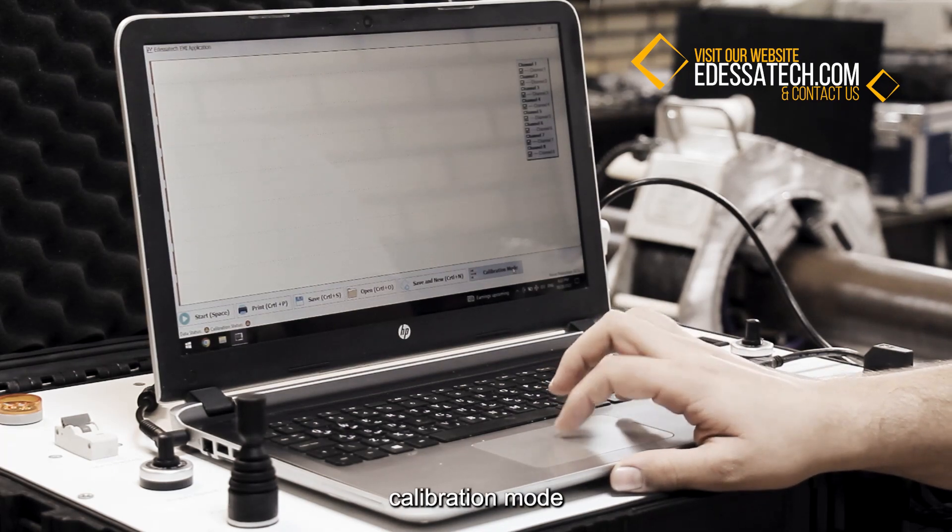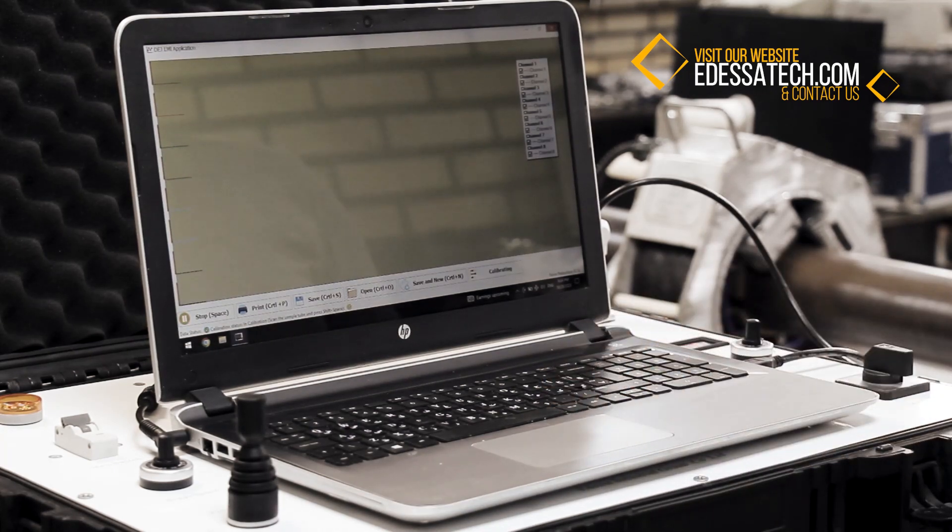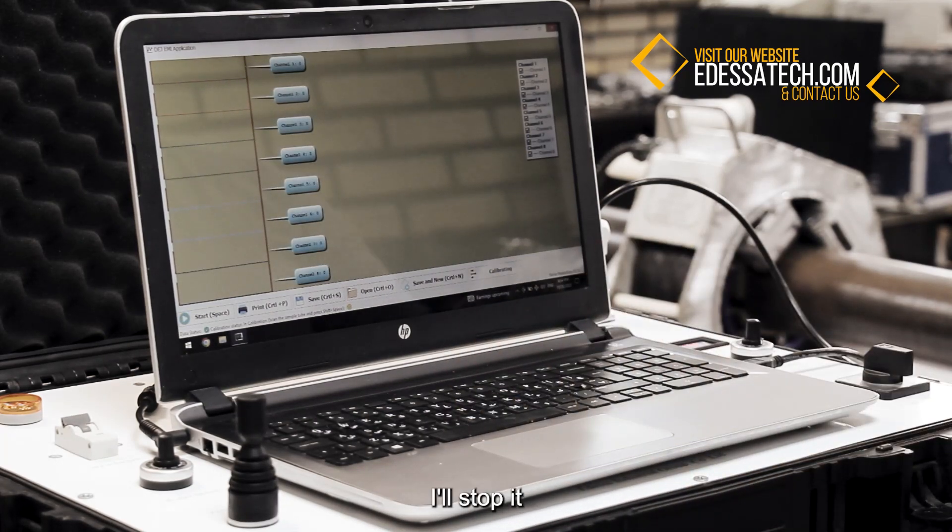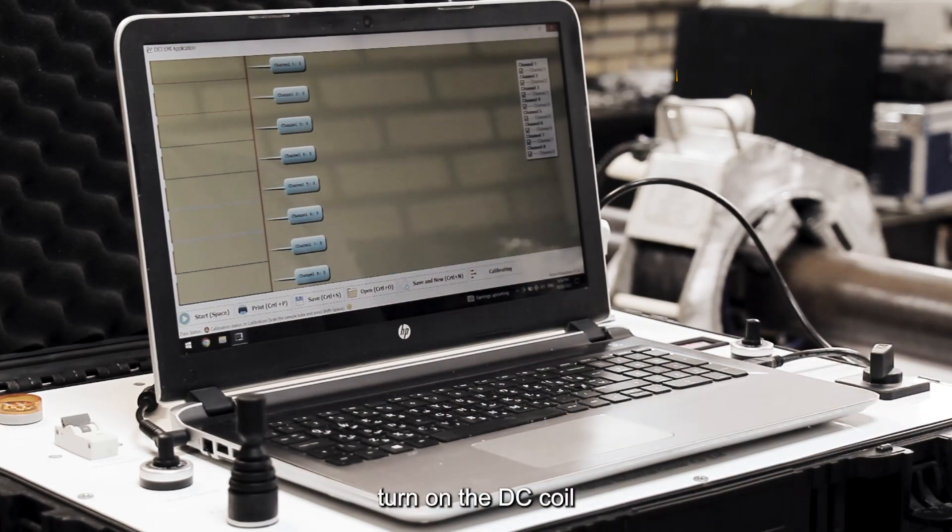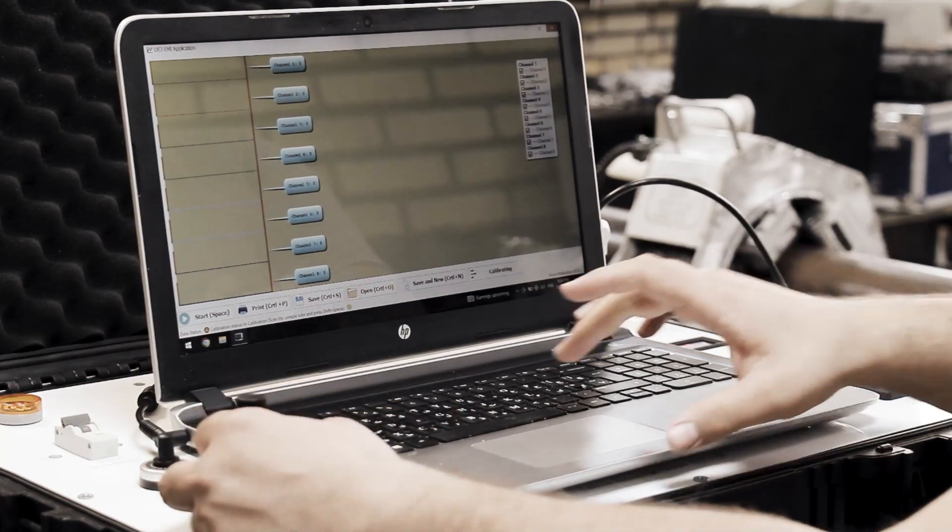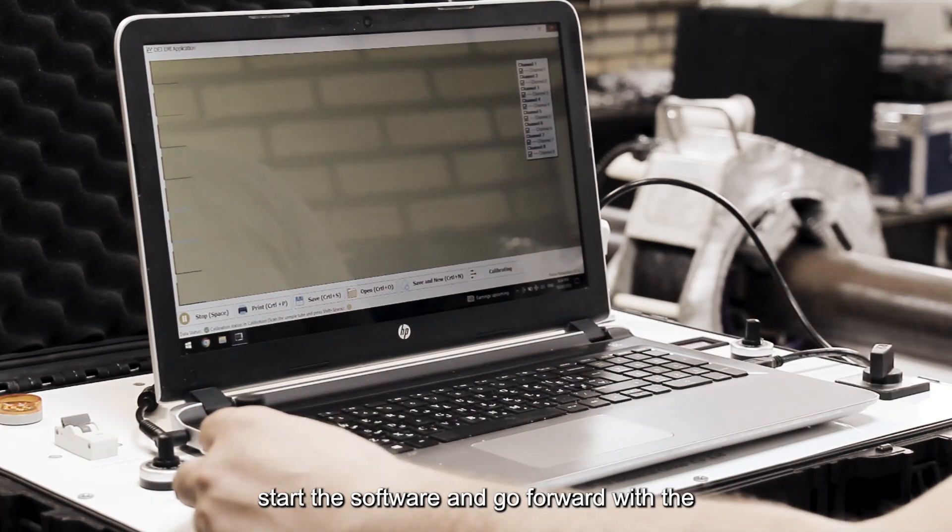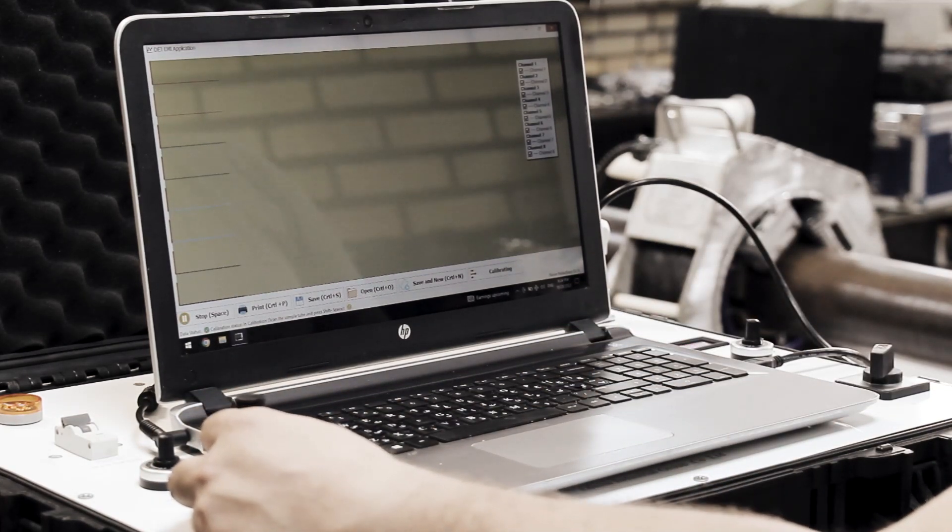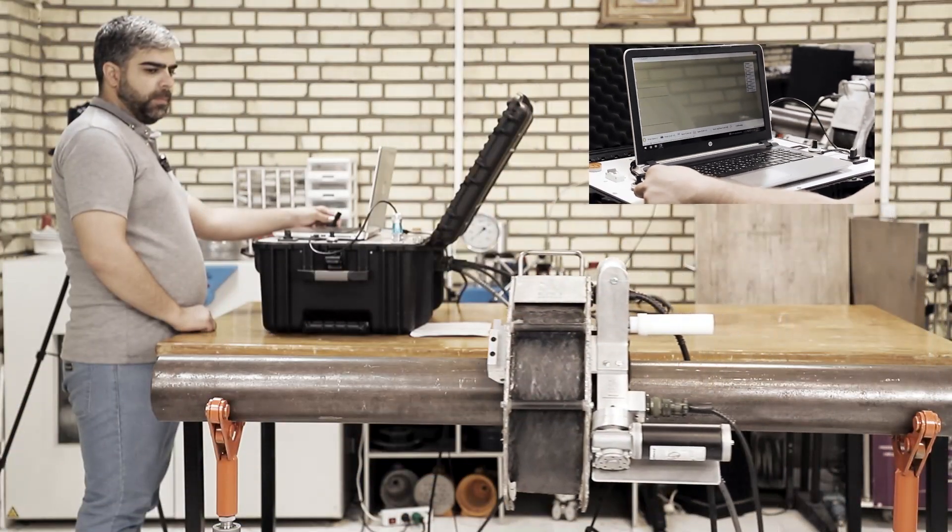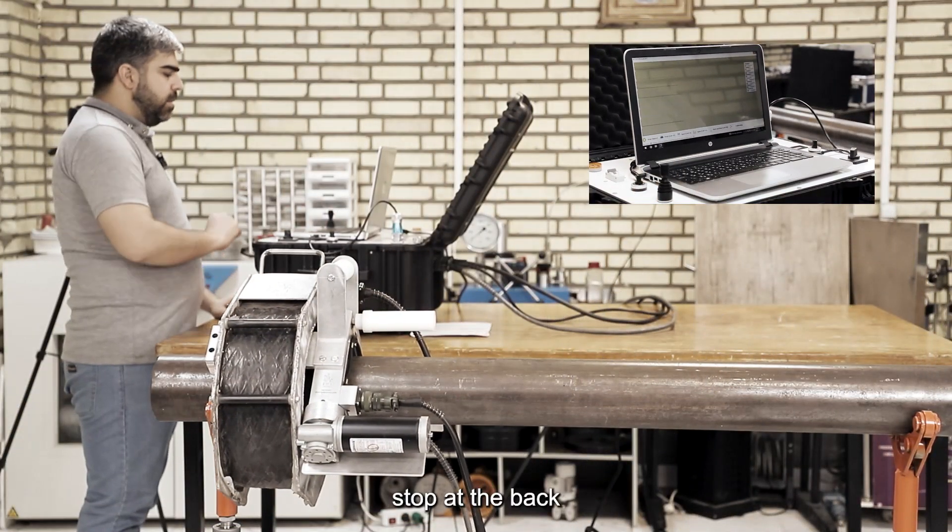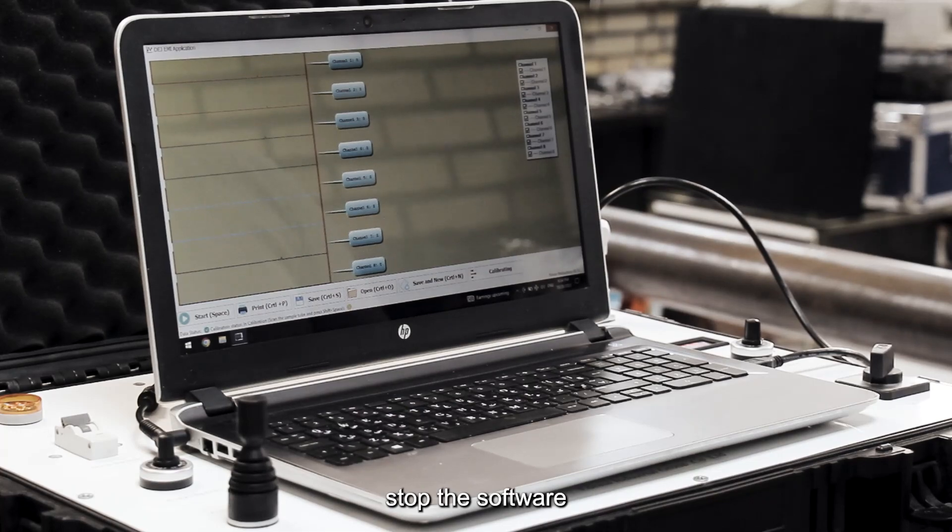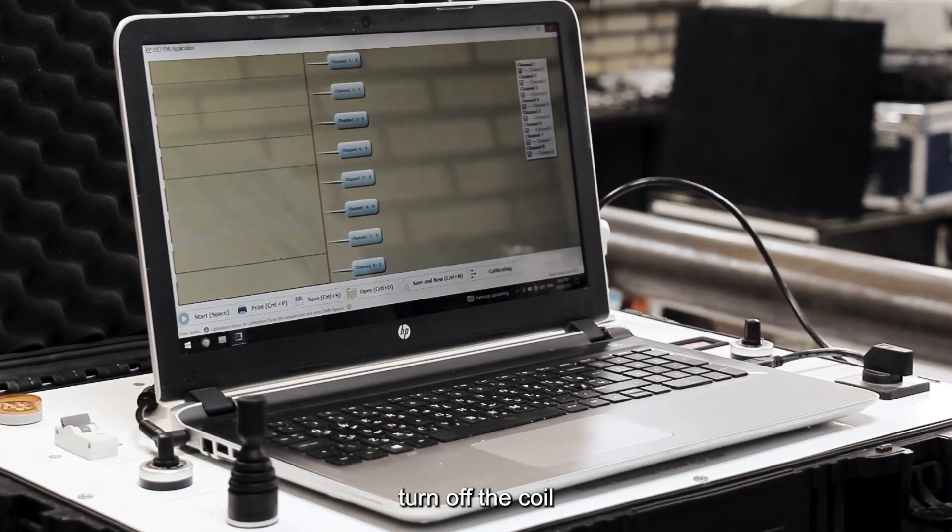And we go to the calibration mode. You can see that the software is running. I stop it, turn on the DC coil, start the software, and go forward with the buggy. Stop at the back. Stop the software. Turn off the coil.